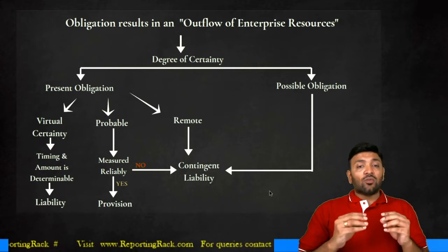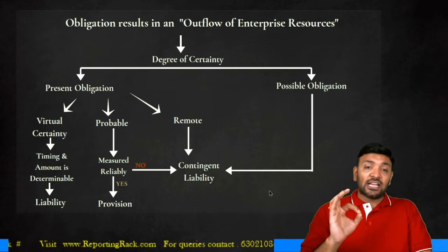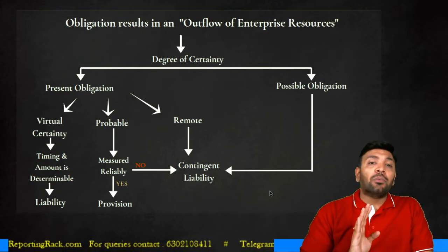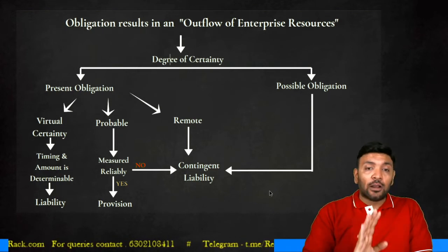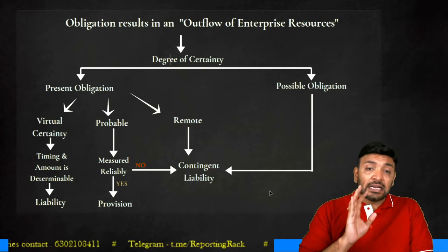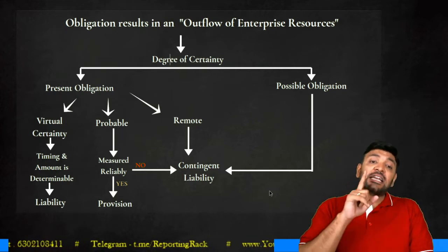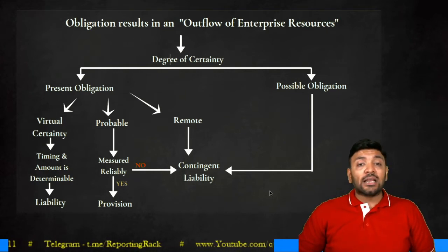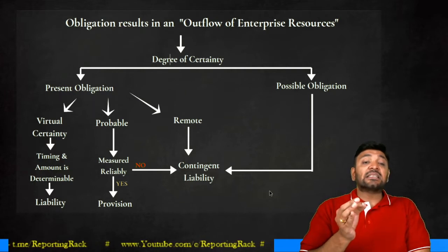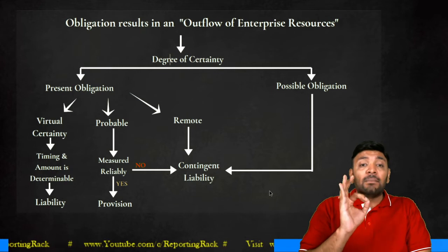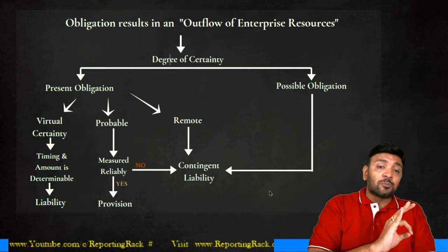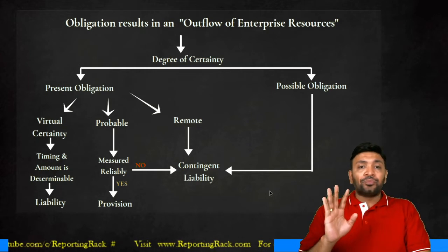A liability is a present obligation which is virtually certain. But if it is not virtually certain but probable — for example, it is probable that I have to declare bonus or pay a certain amount of tax — it is an obligation, but not certain. The tax will be ascertained by the tax auditor, but as of today I am measuring with reasonable certainty the probable amount. In such cases, I will recognize a provision, as long as the amount can be measured reliably.